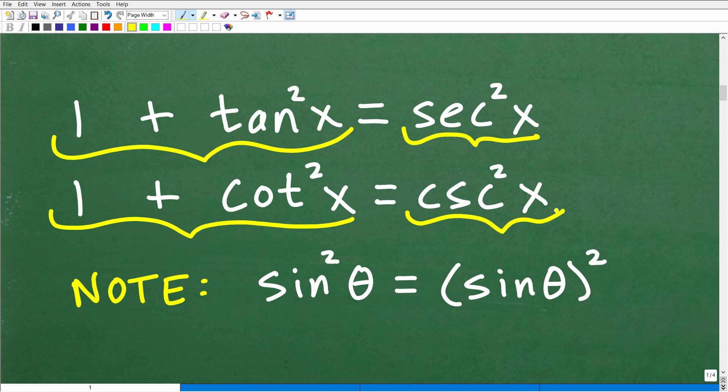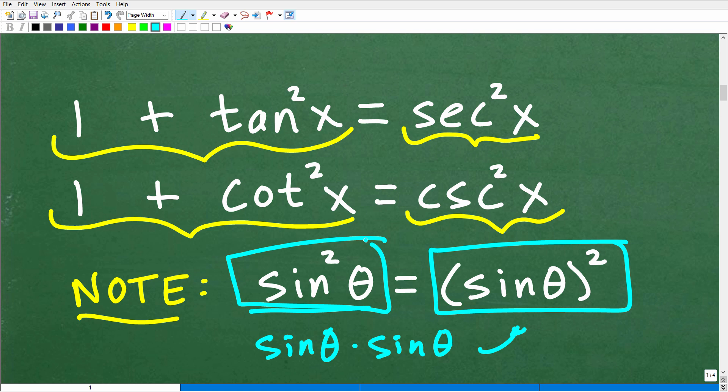And just to be very specific here, when I'm saying sine squared x, that's the same thing, the way I kind of have it written right here, this notation, as sine theta squared. In other words, this notation, because the squared, the exponent right here, is the same thing as sine theta times sine theta, or, of course, sine theta squared. You can think of this notation as the same as this notation. And this is important, especially when you're doing these trigonometric identity problems.